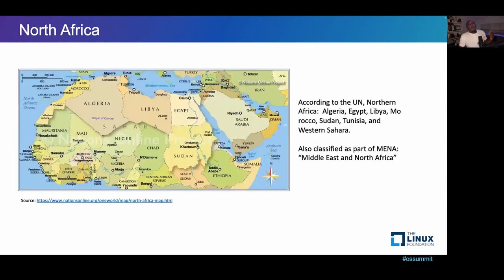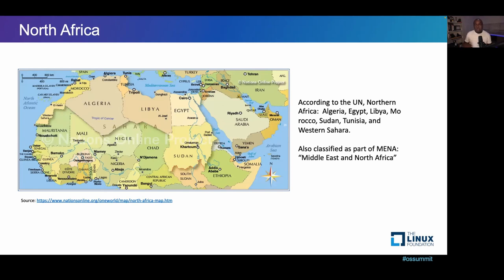Africa has different regions. At the top of the continent is North Africa — countries like Algeria, Egypt, Libya, Morocco, and others. Most times, in most organizations and use cases, North Africa is grouped together with the Middle East: MENA, Middle East and North Africa. Or in broader groupings you see EMEA — Europe, Middle East and Africa — but North Africa is usually grouped with the Middle East.